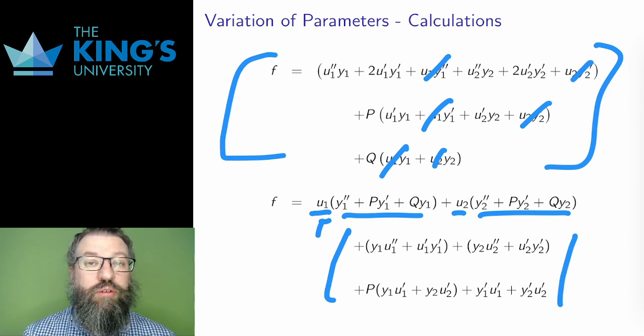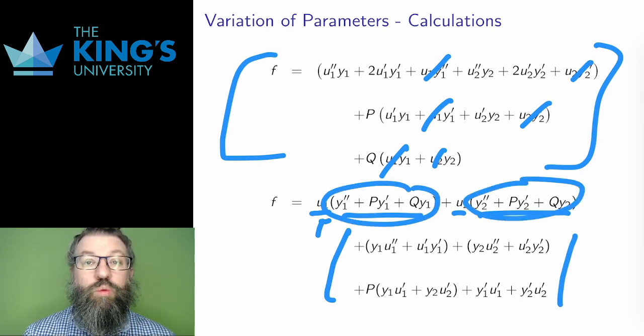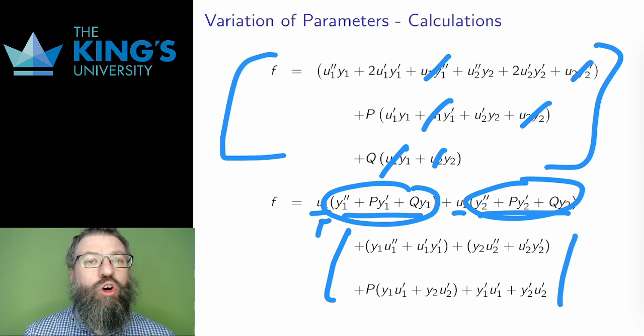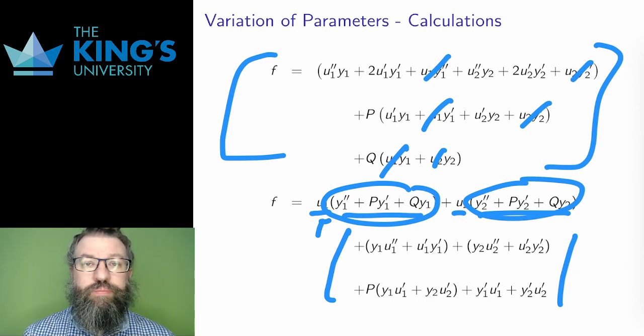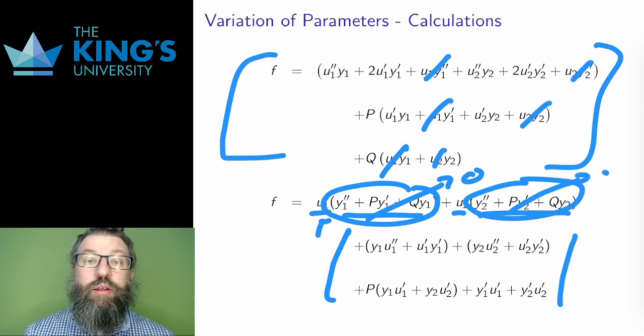These two expressions are just the operator L applied to y1 and applied to y2. But y1 and y2 are homogeneous solutions. That means that L applied to them is zero. So these two are zero, which remove six terms already, leaving only the remaining eight.